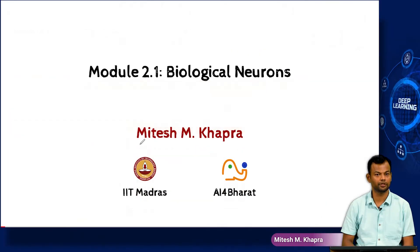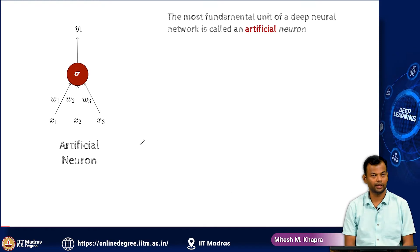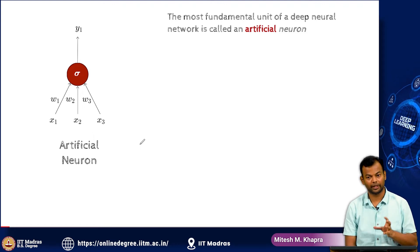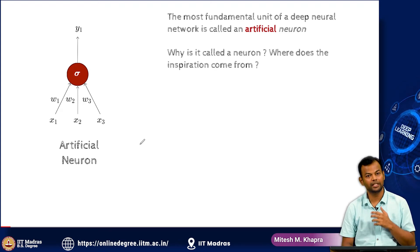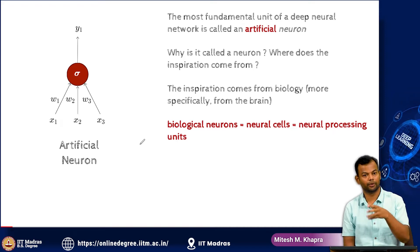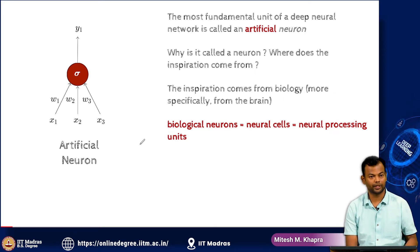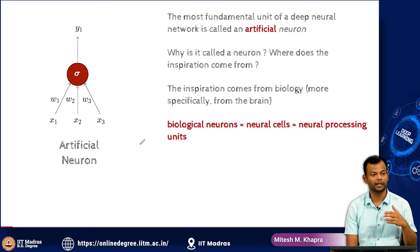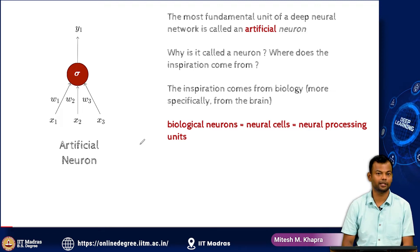Let us start with the first module and we will start with biological neurons. So why biological neurons? What we are interested in knowing about is what is known as an artificial neuron, which is the most fundamental unit in an artificial neural network. But why the term artificial neuron? Where does this inspiration come from? The inspiration actually comes from biology. We talked about biological neurons in the history section — the term neuron was coined somewhere in the 1890s as the processing unit in the brain. The idea is: just as we have neurons in the brain which can do fairly complex processing, can we have artificial neurons which can also help us do some computational processing? That is where the inspiration comes from.